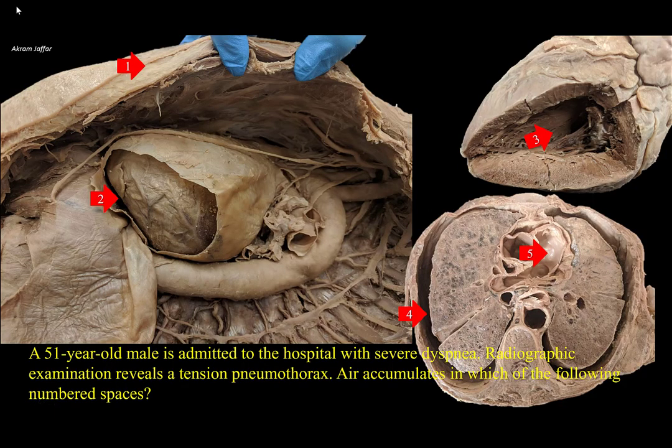A 51-year-old male admitted to the hospital with severe dyspnea. Radiographic examination reveals a tensioned pneumothorax. Air accumulates in which of the following numbered spaces?